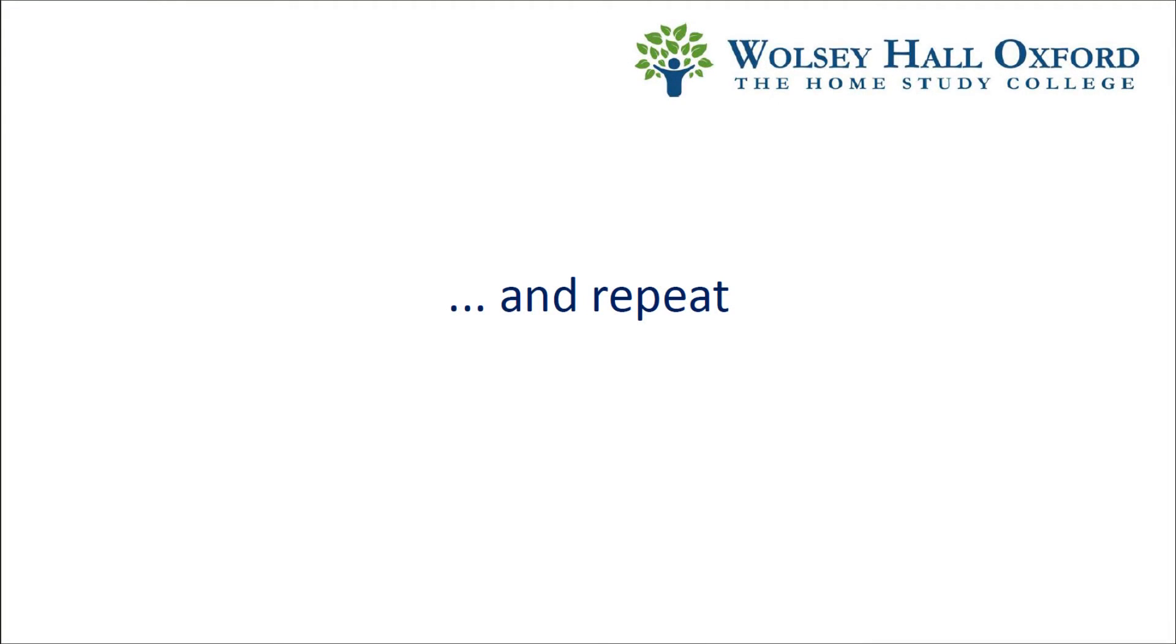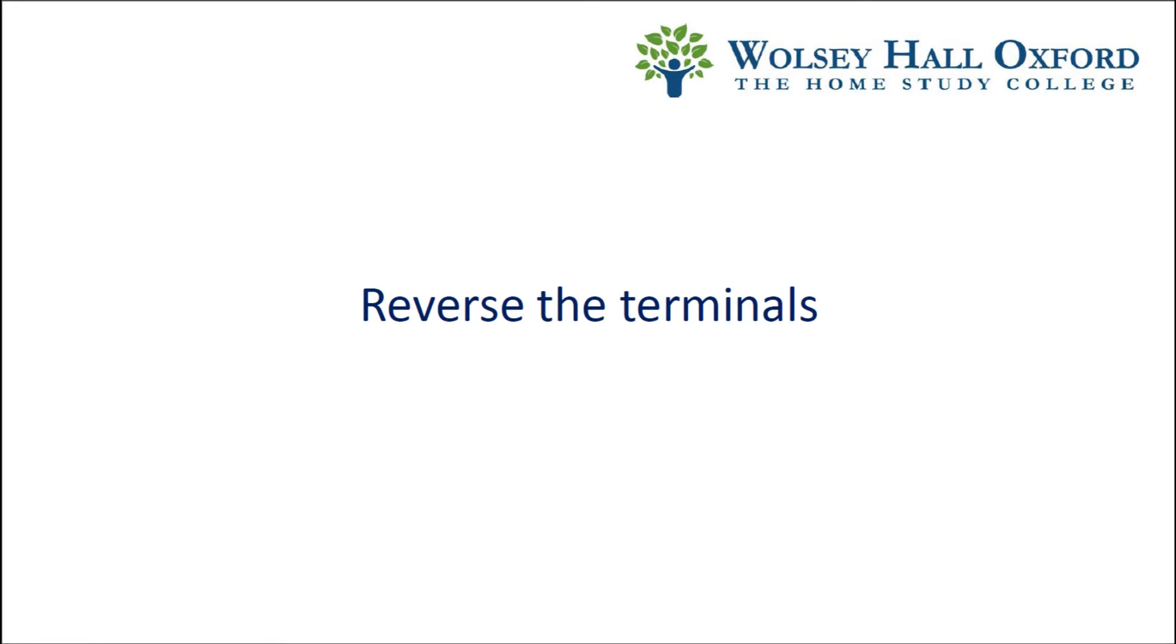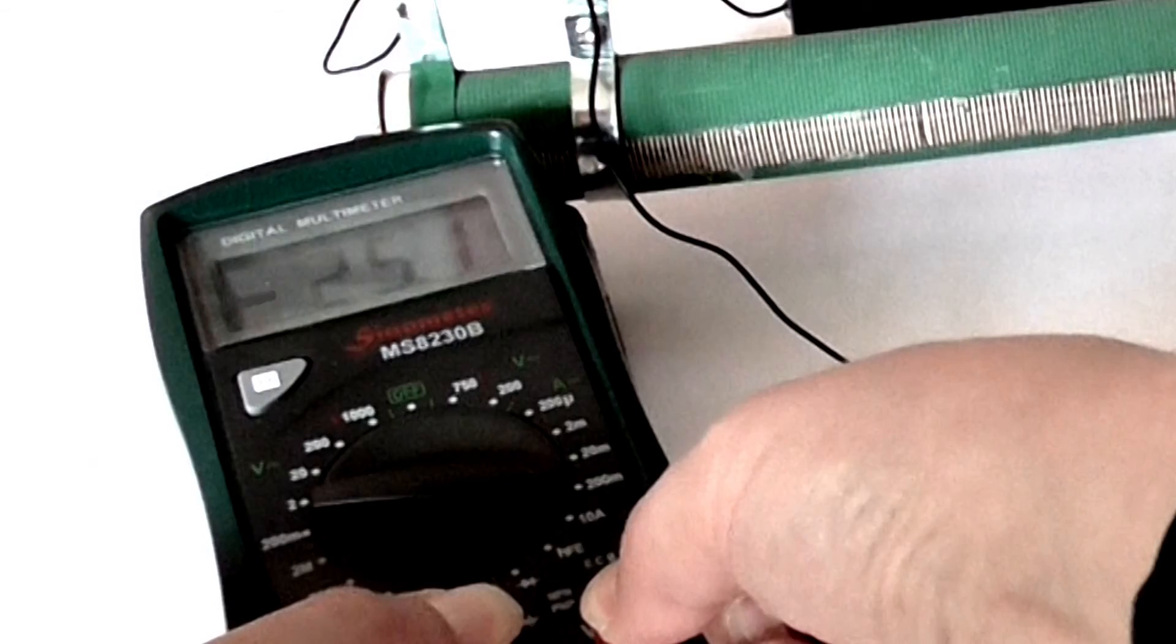We do this for a few more slider positions until we reach zero. Now we need to see what happens when the current flow is reversed, which just involves swapping the battery around. You'll notice now the ammeter reading is actually negative.